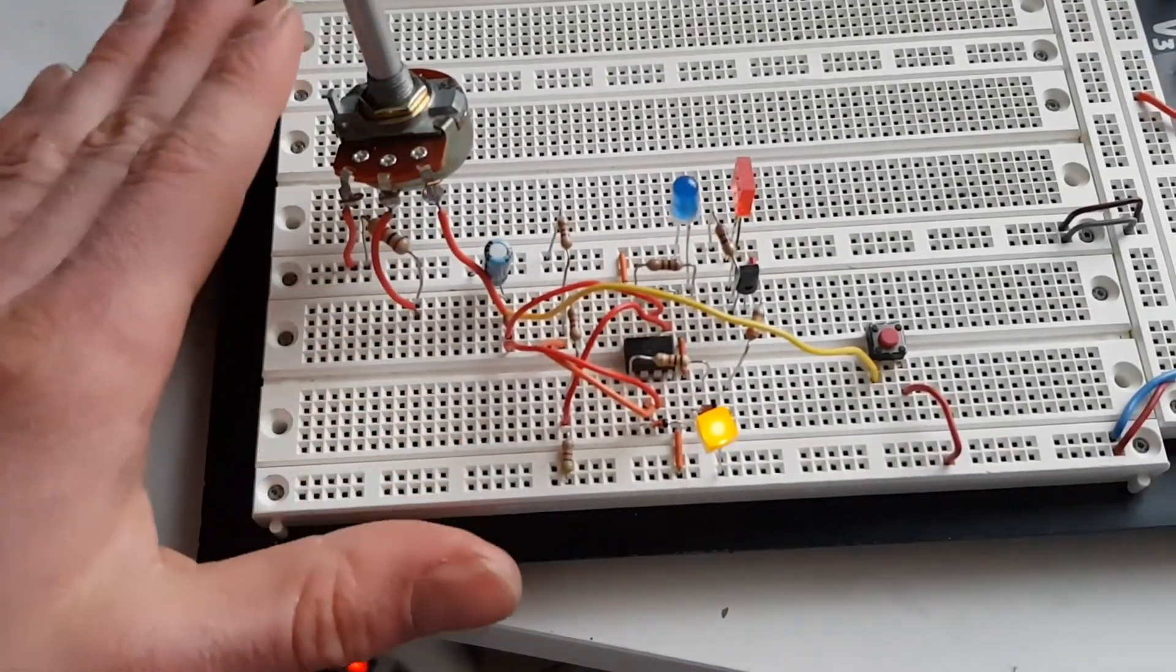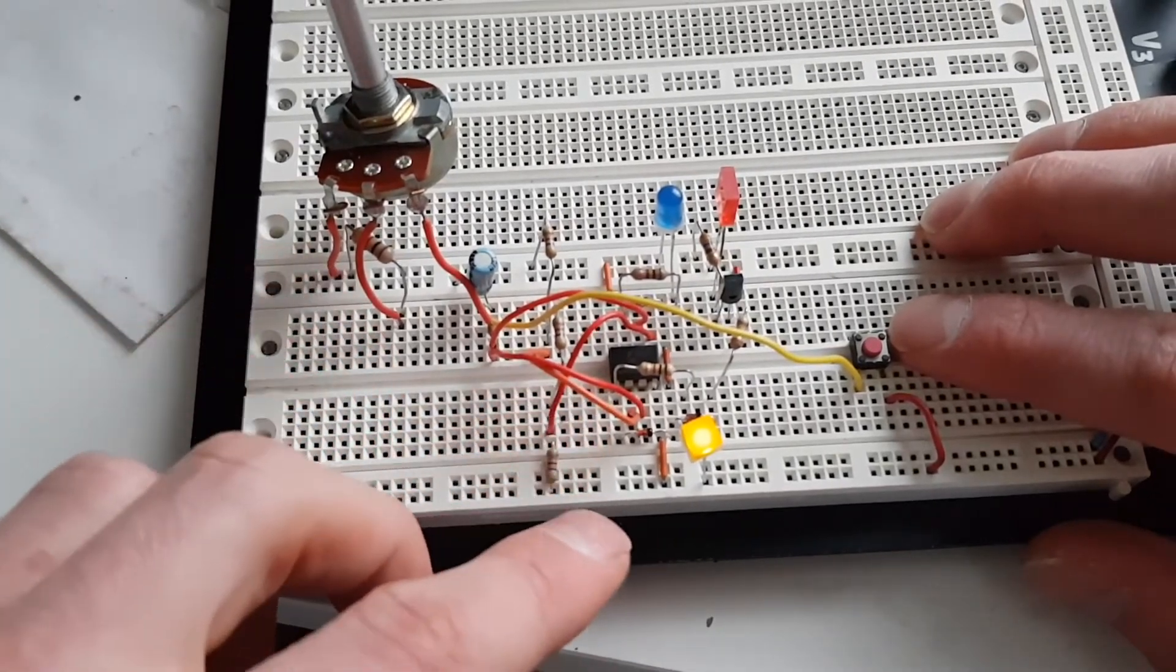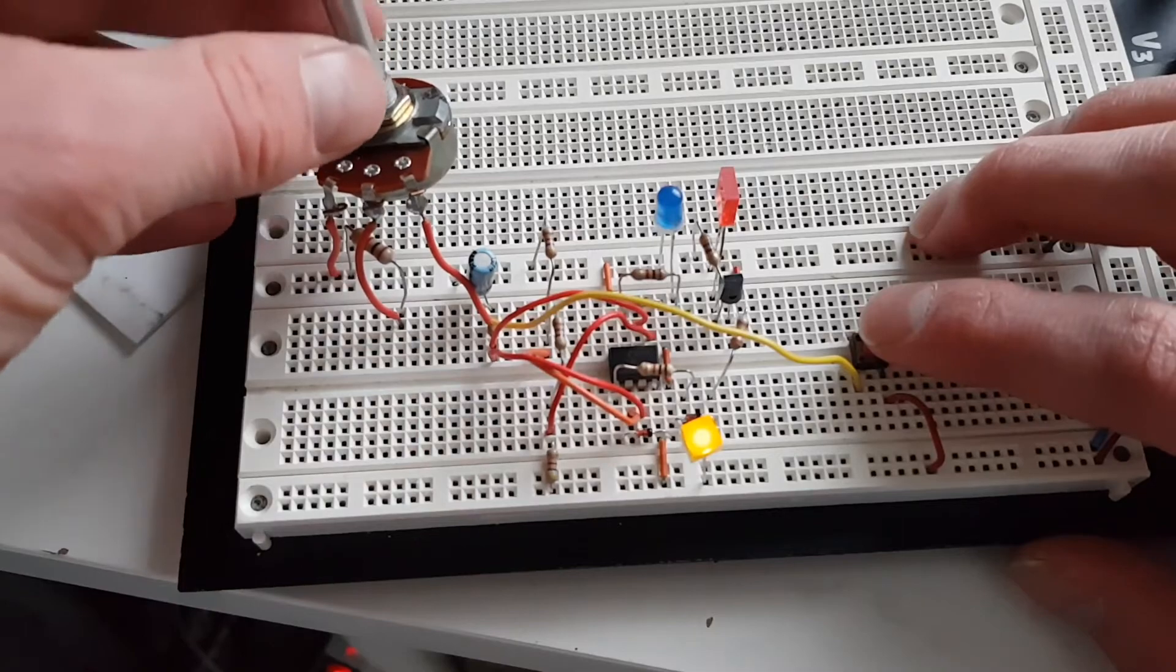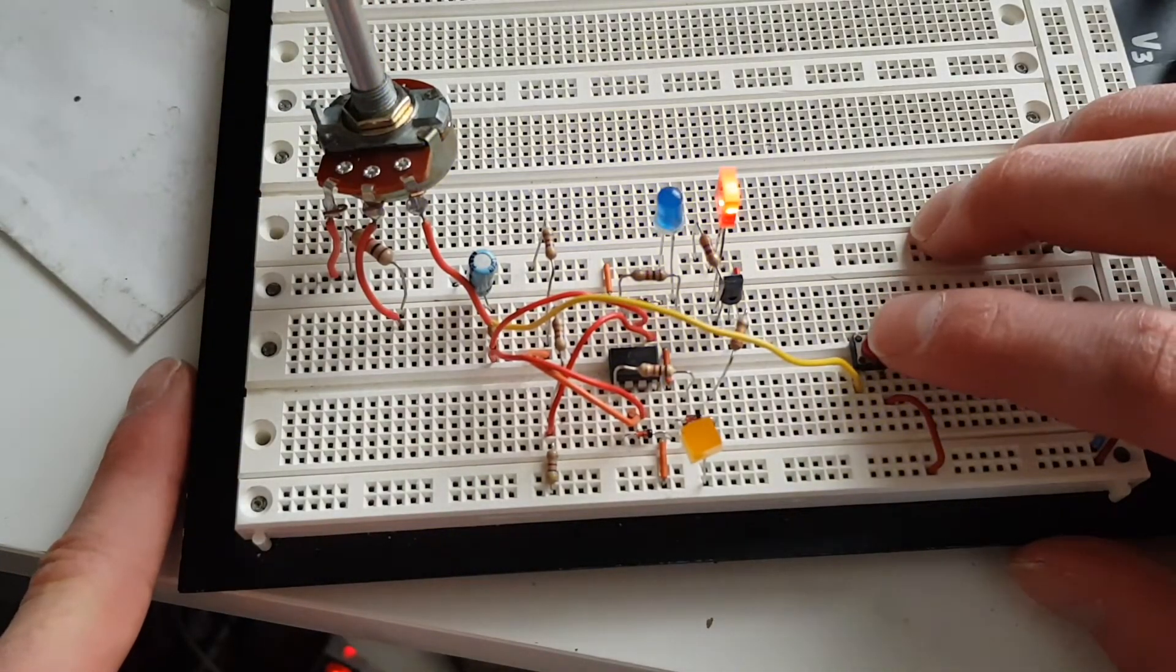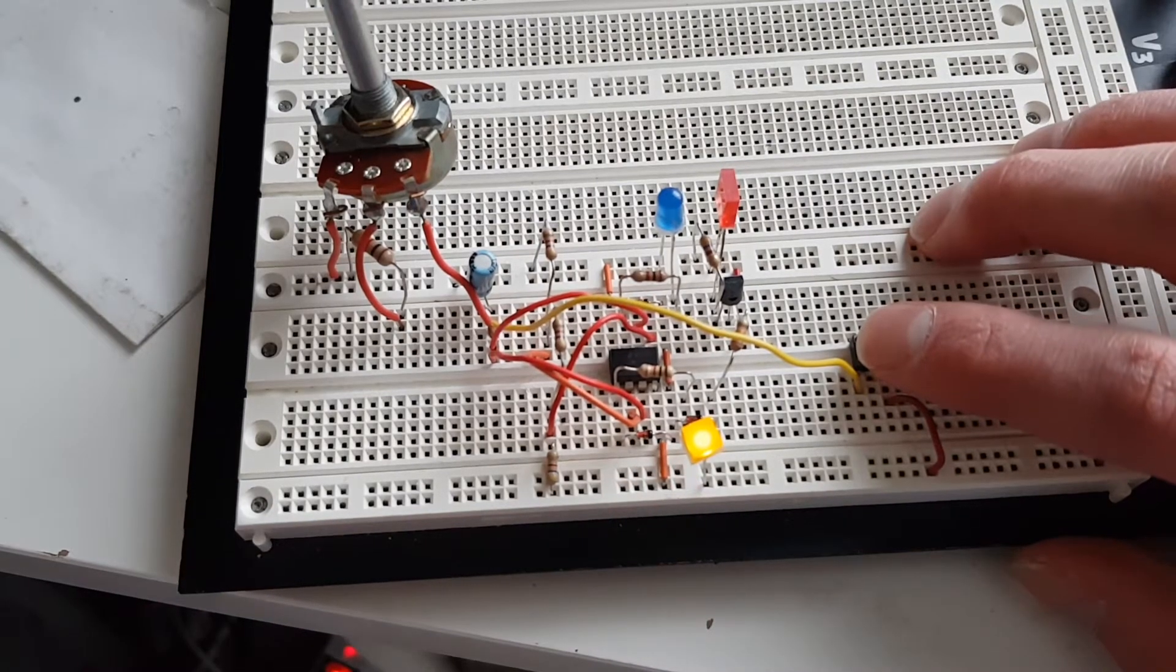Alright, here's the sequencer on the breadboard here. We've got the 1458 op-amp, the transistor, and of course all the LEDs. We have a one megaohm potentiometer. And if I press the switch, it just goes through each LED and then it hangs on the last one there.